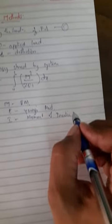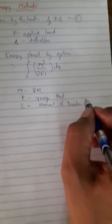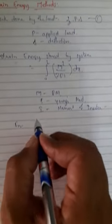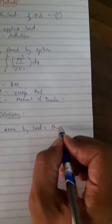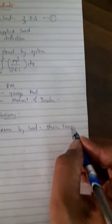E is Young's modulus, which is a material property, and I is the moment of inertia, which is a geometrical property of the section. For equilibrium, work done by the load is equal to strain energy stored. So work done by the load is half P delta, and that equals the integration from 0 to L of M² by 2EI dx.